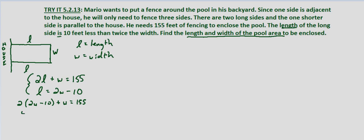So that gives us 4W minus 20 plus W equals 155. So 5W, 4W plus W and let's add 20 to both sides that equals 175. And if we divide both sides by 5 we get 175 divided by 5 is 35.